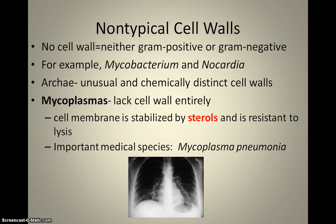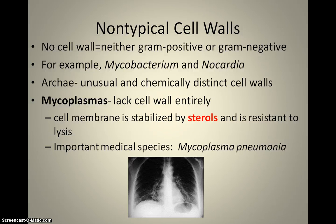Most bacteria fall into gram-positive or gram-negative, but some have modified or no cell walls. Groups with non-typical or no cell walls include mycobacterium and nocardia. Archaea have different types of cell walls, and we're very generic about that because they were only discovered within the past 30 to 35 years. They're very difficult to culture in a lab, so we've been able to find them genetically but have had trouble growing, observing, and staining them.